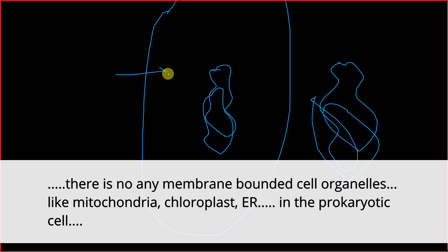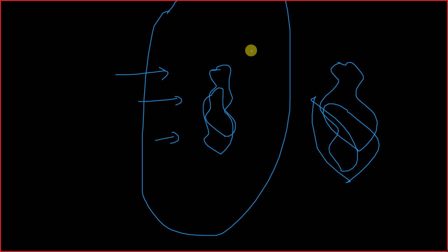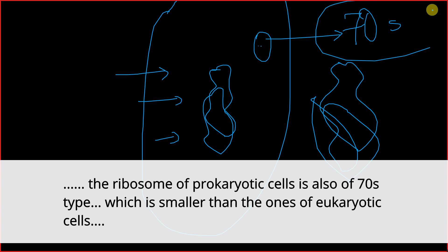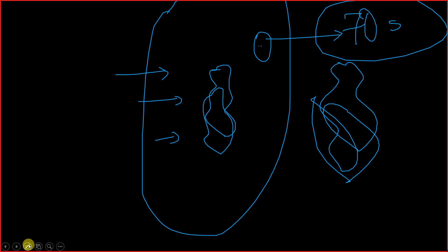Prokaryotic cells have no chloroplast or mitochondria. The ribosome present in prokaryotic cells is of the 70S type, where 'S' stands for the Svedberg unit.